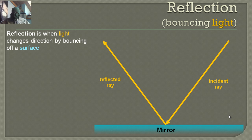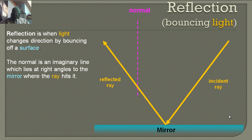The light ray coming in is the incident ray. The light ray going out is the reflected ray. The normal line is an imaginary line which lies at right angles to the mirror where the ray hits it.